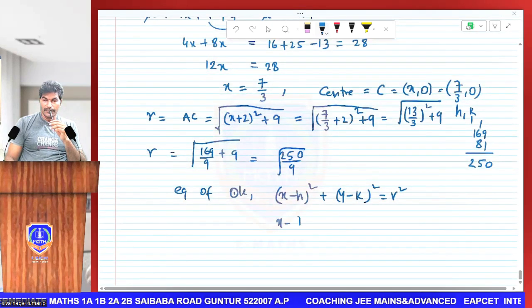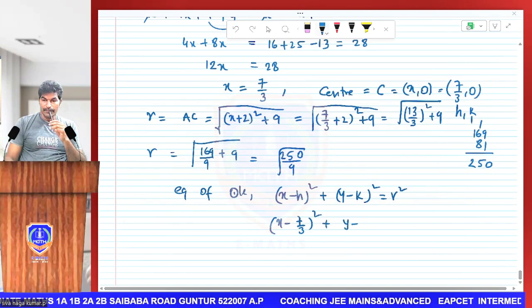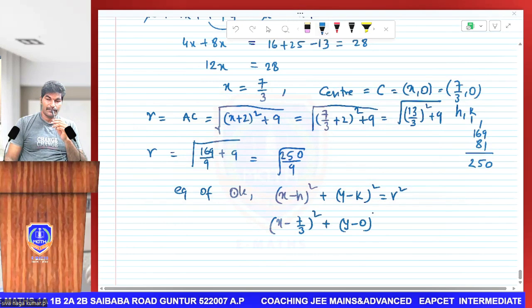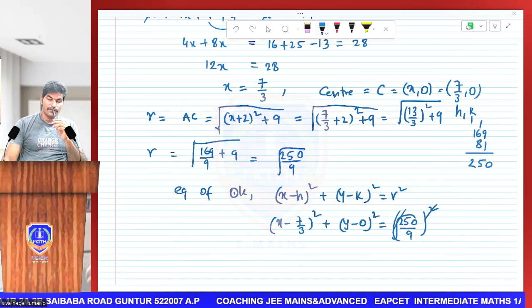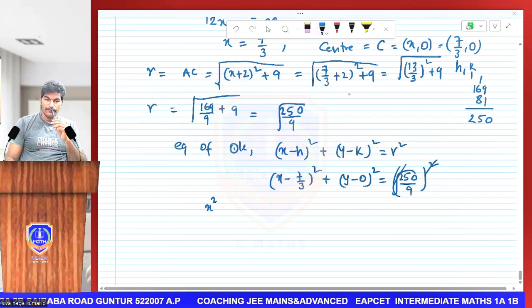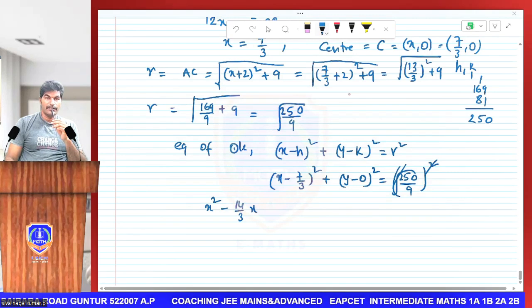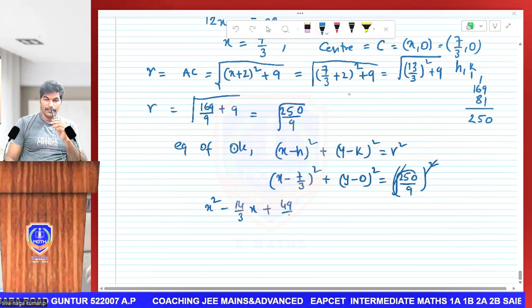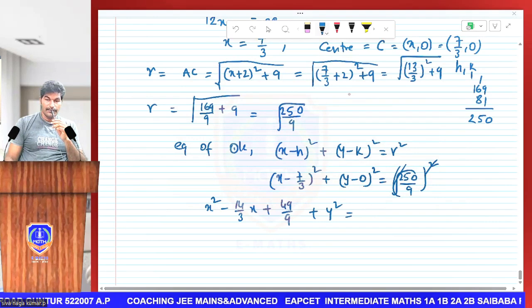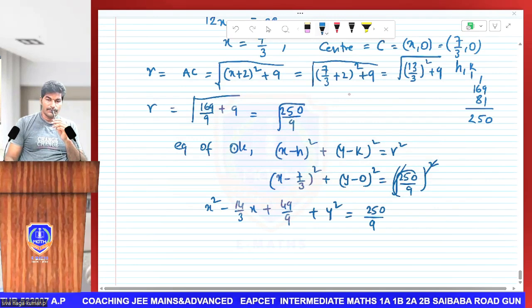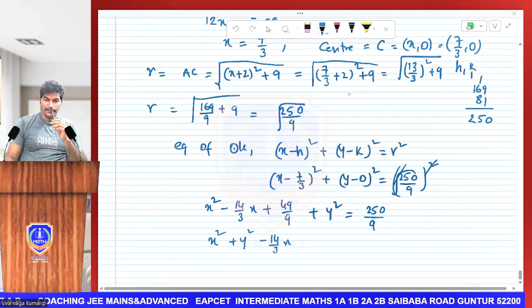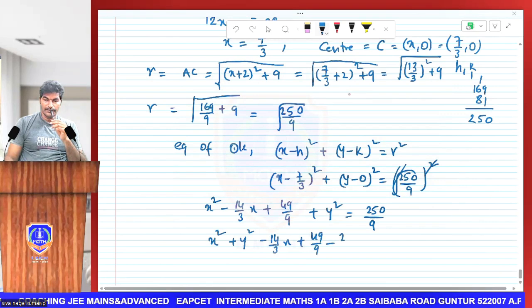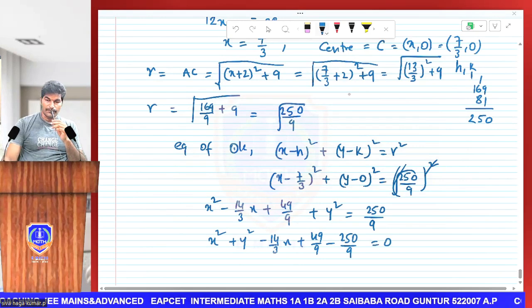(x - 7/3)² + (y - 0)² = 250/9. In expansion: x² - 14x/3 + 49/9 + y² = 250/9. This side: x² + y² - 14x/3 + 49/9 - 250/9 = 0.